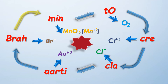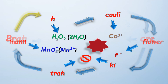इस प्रकार हमने सब कुछ एक अच्छी learning trick line के अंदर learn कर लिया। अब आगे की line है: 'Man hai cauliflower ki tarah।' इसमें 'Man' को MnO4- या Mn2+ से denote किया। 'Cauliflower' में — 'Cauli' को Co+3 से और 'Flower' को F- से denote किया। 'Ki tarah' का use सिर्फ line को learn करने के लिए किया गया है।